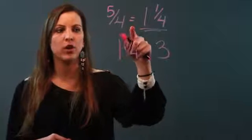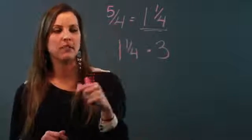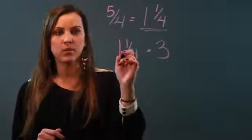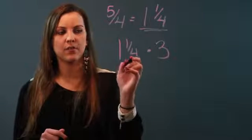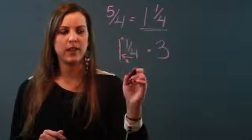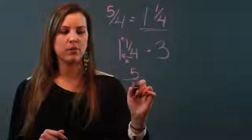So I actually just did it backwards for you, but we'd want to get back into a mixed number. So we're going 4 times 1 is 4 plus 1 is 5. Keep the denominator of 4.